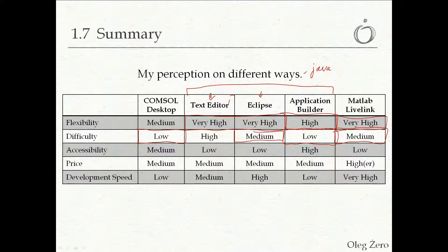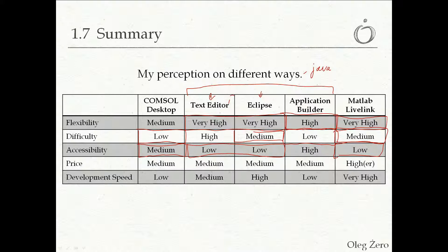Accessibility is how much impact you can make on others while sharing your models. If you're the only user, this doesn't apply, but if you're going to share your work, others might not be as experienced. The console desktop I'd rate as medium, since some users may want to use your model results but not know how to operate the console. Text Editor, Eclipse, and MATLAB Live Link all have low accessibility unless you invest time creating a customized UI — they're very difficult to share. Comparing all that to the Application Builder, it has much more advantage because it provides all the tools needed to make a graphical user interface.